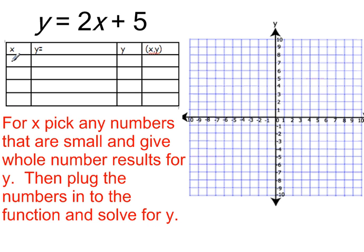So we're going to pick negative 2, negative 1, 0, and 1. And we're going to plug these values in for x. So we're going to take 2 times negative 2 plus 5, and my result is my output of 1. So my ordered pair is going to be negative 2, 1.